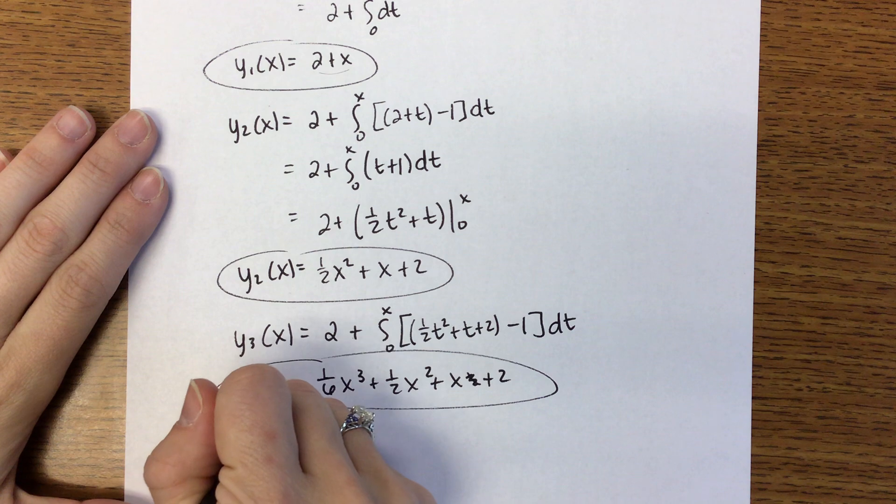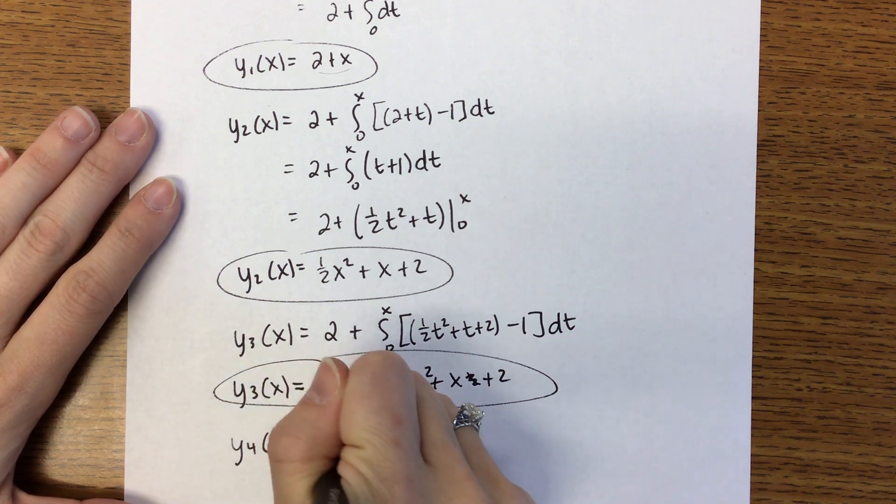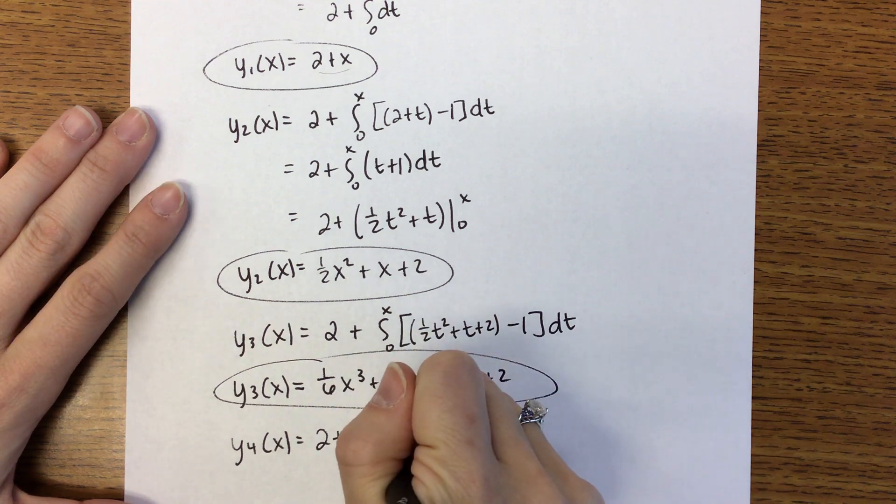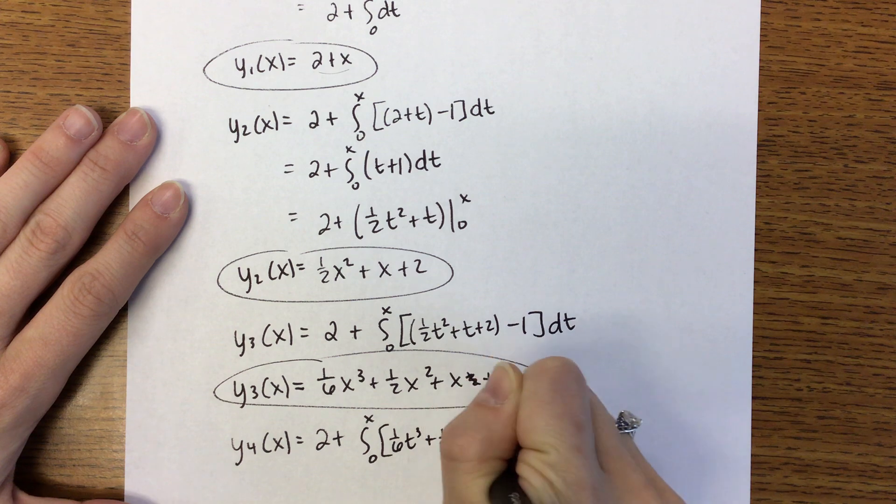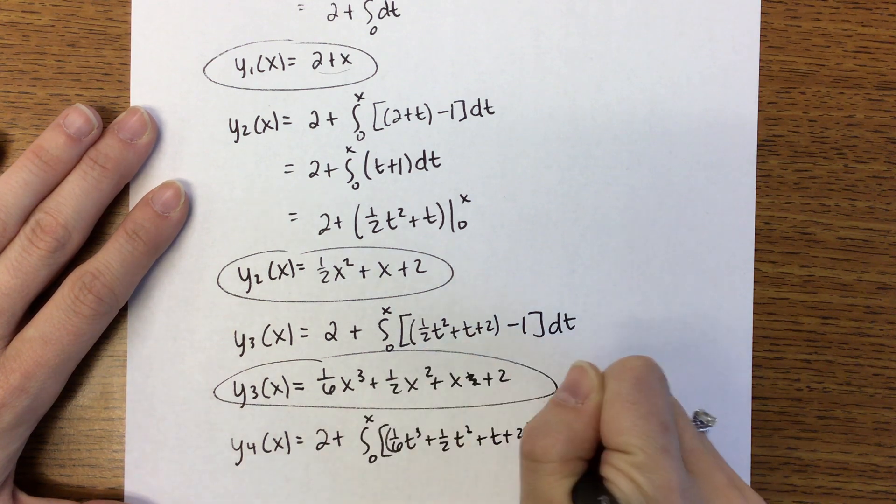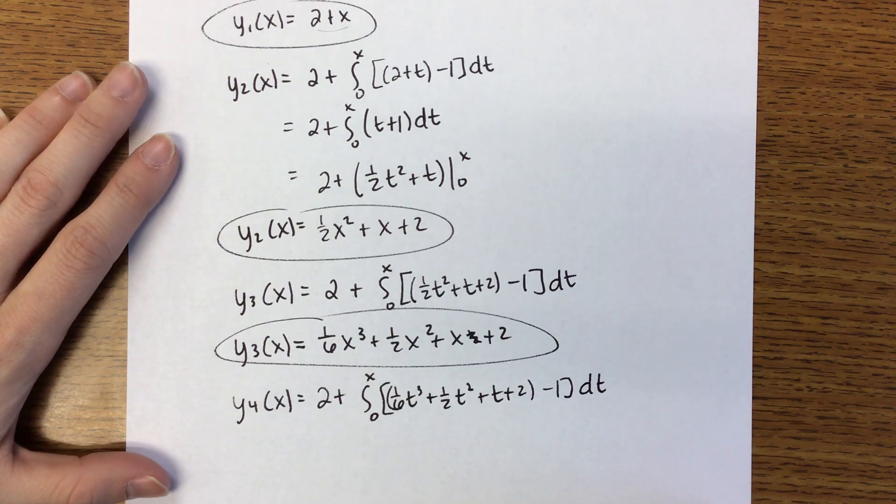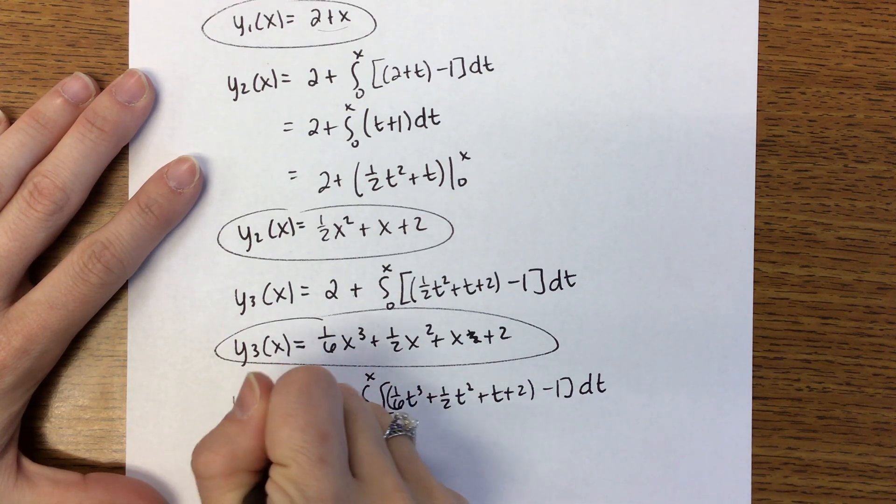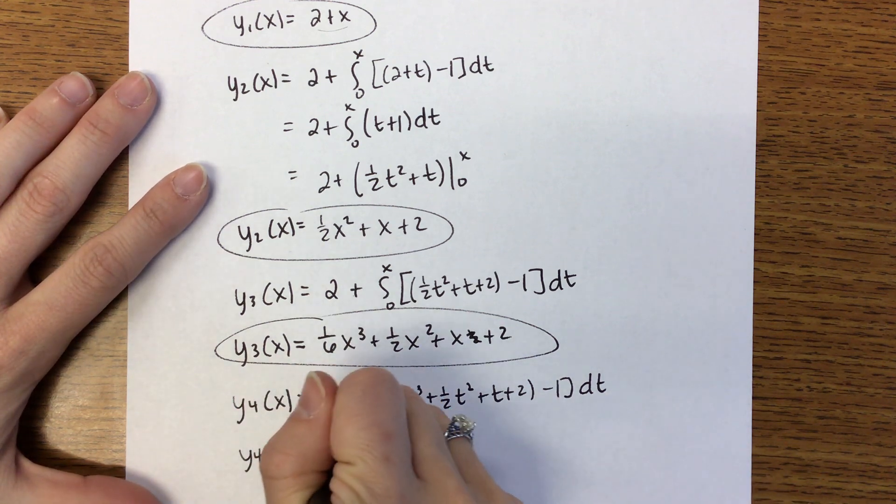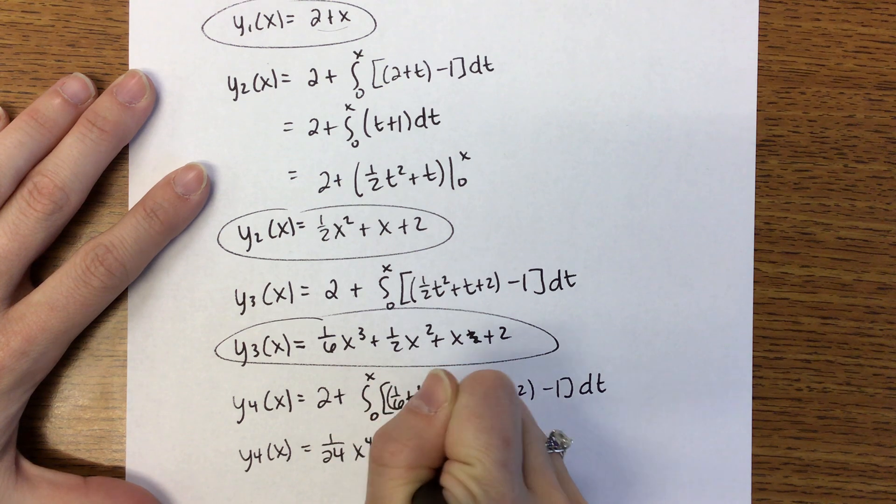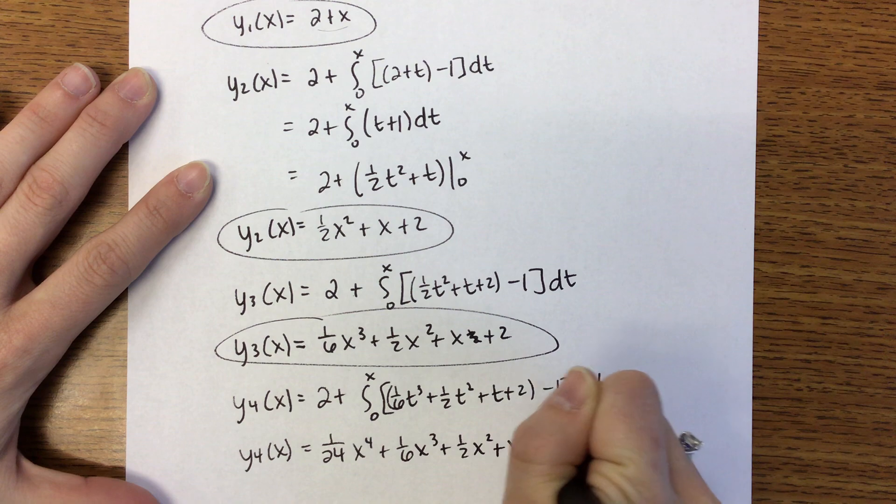And then we need to find the fourth approximation which will also be 2 plus the integral 0 to X, 1 sixth T cubed plus 1 half T squared plus T plus 2 minus 1. I'm assuming that you all are comfortable simplifying, integrating, all that, in which case you get 1 over 24 X to the fourth plus 1 sixth X cubed plus 1 half X squared add X add 2.